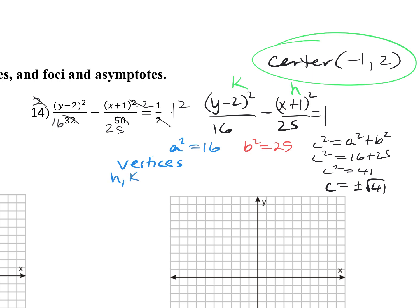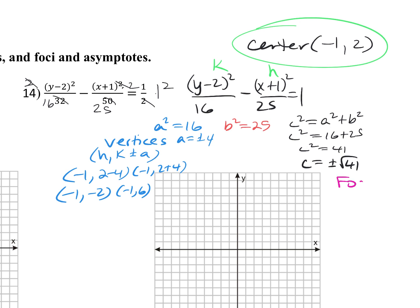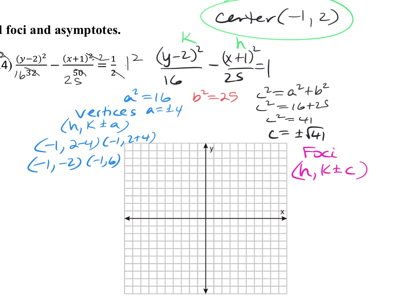Since a-squared was under y, I add a to k: h comma (k plus or minus a). With a equals 4, the vertices are (negative 1, 2 minus 4) and (negative 1, 2 plus 4), giving (negative 1, negative 2) and (negative 1, 6). For the foci, I do the same but add c to k: (negative 1, 2 minus square root of 41) and (negative 1, 2 plus square root of 41).